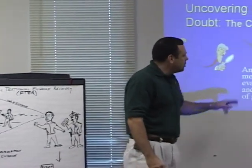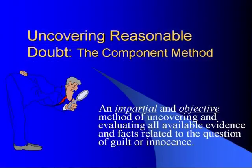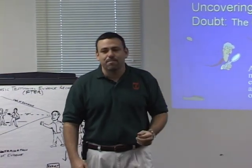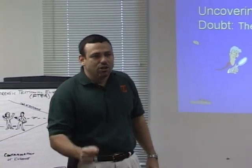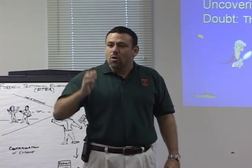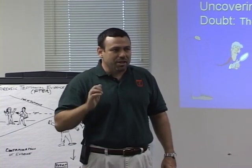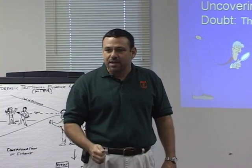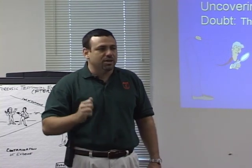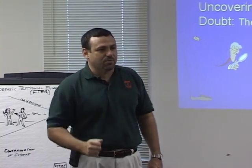The component method is an impartial and objective method of uncovering and evaluating all available evidence and facts related to the question of guilt or innocence. Let's break this down. Impartial and objective — very important. Which means we don't spin. We've got to maintain a position of professionalism: we're impartial and objective advocates of the truth.